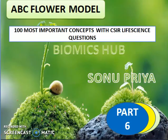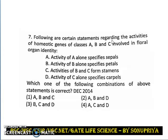Now let us have a look at this question. The following are certain statements regarding the activities of homeotic genes of class A, B, and C involved in floral organ identity. The first point is: activity of A alone specifies sepal; activity of B alone specifies petal; activity of B and C forms stamens; activity of C alone specifies carpel. We have to find which combination of these statements is correct.